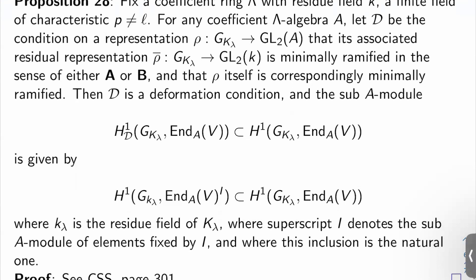So proposition 28. Fix a coefficient ring lambda with residue field K, a finite field of characteristic P, which isn't L. For any coefficient lambda algebra A, let D be the condition on a representation rho from G_K_lambda to GL_2 of A, that its associated residual representation rho bar from G_K_lambda to GL_2 of K is minimally ramified in one of the two senses A or B above, and that rho itself is correspondingly minimally ramified in the same way.